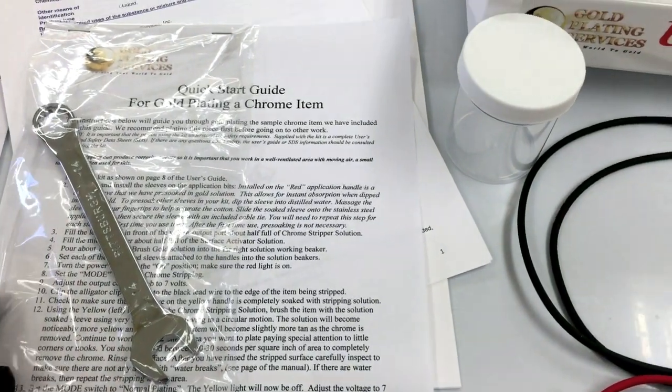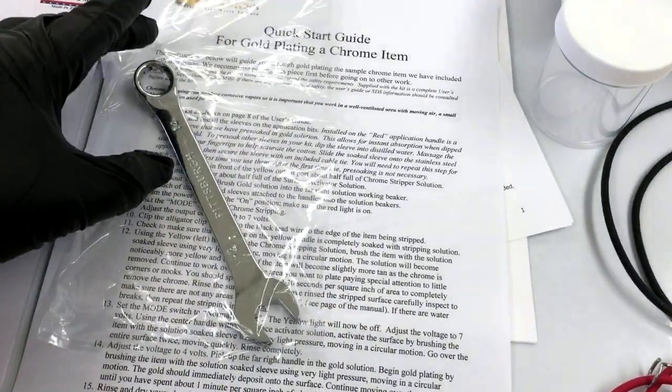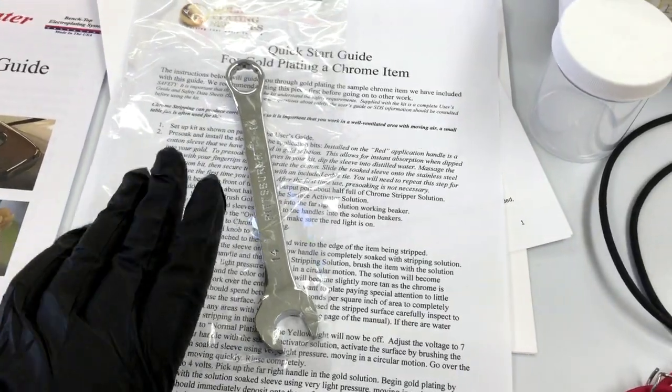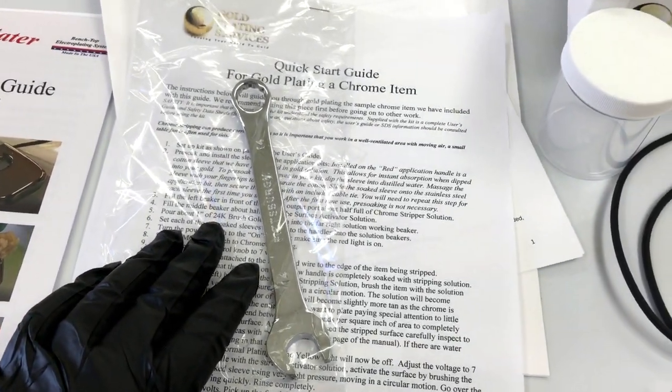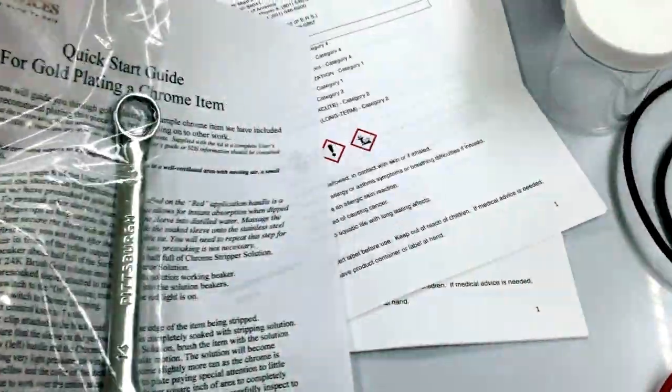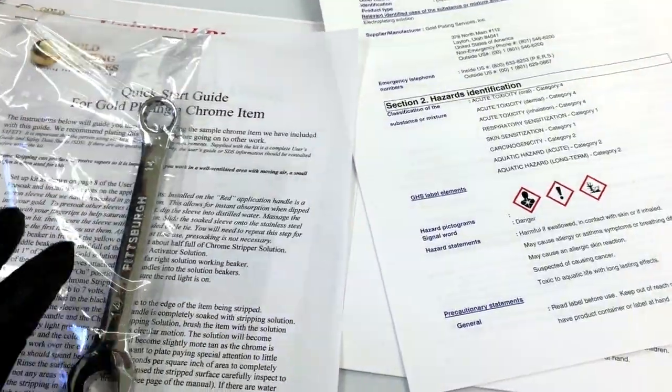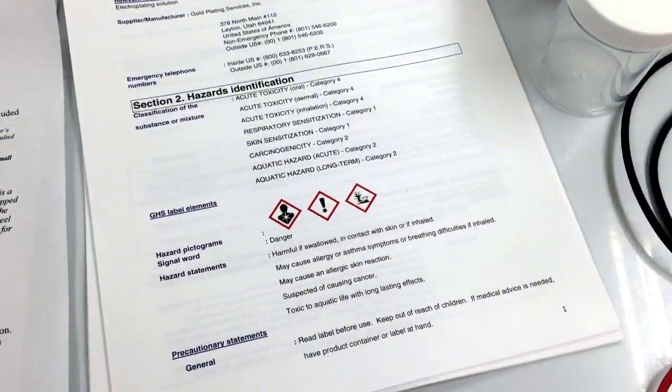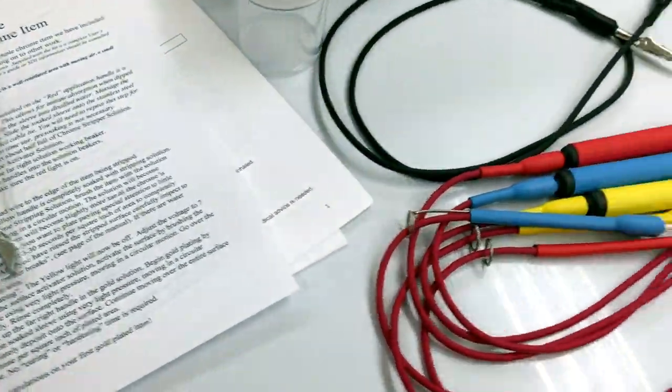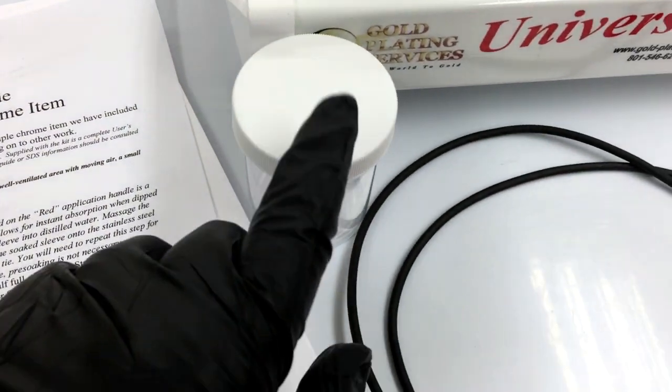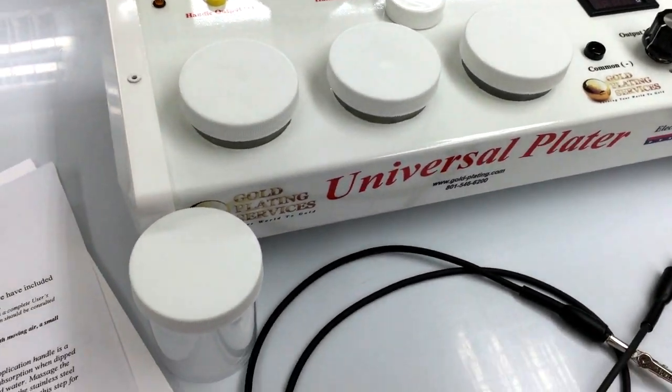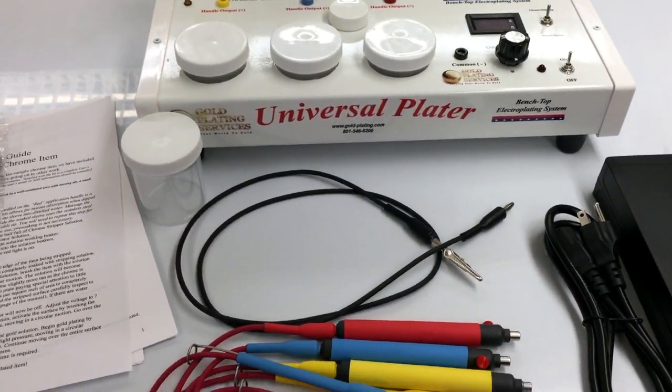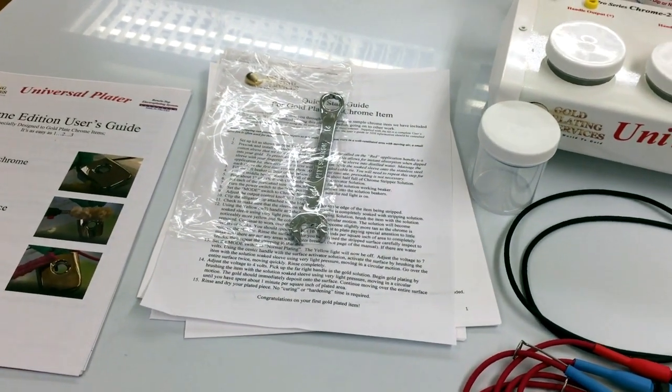I strongly recommend everybody do that first. Don't skip it please. The reason we made this video is to save you trouble, and I promise you doing this as your first item will get you familiar with the kit, save you future problems. Even if you don't care about having a gold wrench, believe me, do it. You've got your safety data sheets here, one for each solution. Okay, so what we're going to do is set this bad boy up and then we're going to do the quick start guide for you.